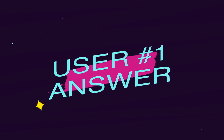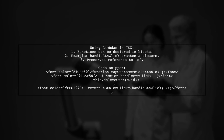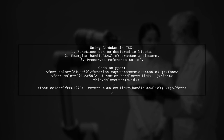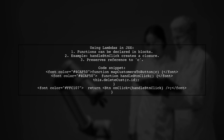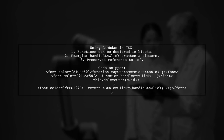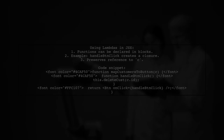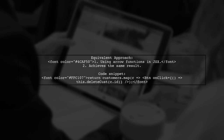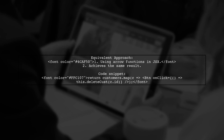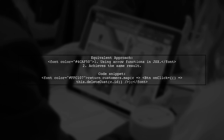Let's now look at a user-suggested answer. The question of whether using Lambdas in JSX attributes is an anti-pattern is debated. JavaScript allows functions to be declared within blocks, as shown in the example. Here, a function creates a closure around an object, preserving its reference. This approach is equivalent to using an arrow function directly in the JSX. Both methods achieve the same result, demonstrating that using Lambdas can be a valid choice in this context.